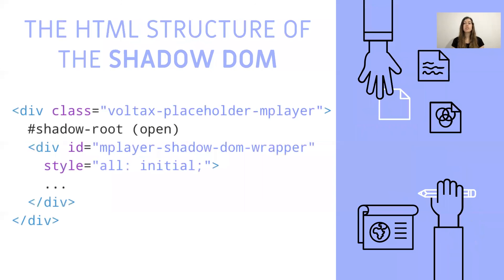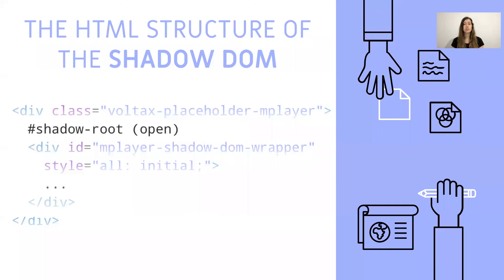Let's take a look at the HTML structure of the Shadow DOM as it appears in the DevTools inspector. As we can see in the player's HTML structure, the div with the class name 'voltax-player' is the shadow host. Underneath it, we have the shadow root attached to it with the encapsulated code of the player, which is part of the shadow tree.